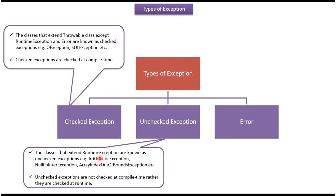The classes that extend RuntimeException are known as unchecked exceptions. Examples of unchecked exceptions are ArithmeticException, NullPointerException, ArrayIndexOutOfBoundsException, etc. Unchecked exceptions are not checked at compile time; rather, they are checked at runtime.